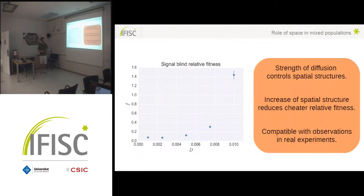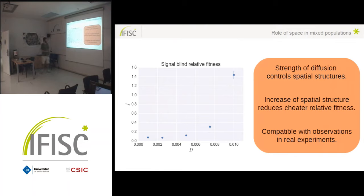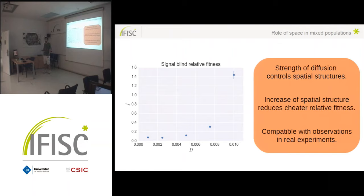We want to see how this affects mixed populations with a signal-blind cheater and a wild type strain. We change the diffusion constant of the individuals. When we reduce the diffusion constant, the spatial structure of the system becomes more important, and we see that when clustering plays an important role, the relative fitness of the cheaters decreases. This happens because a cluster of wild type far from a cluster of cheaters means the cheaters cannot diffuse to reach the wild type, so the benefit they receive is very low.